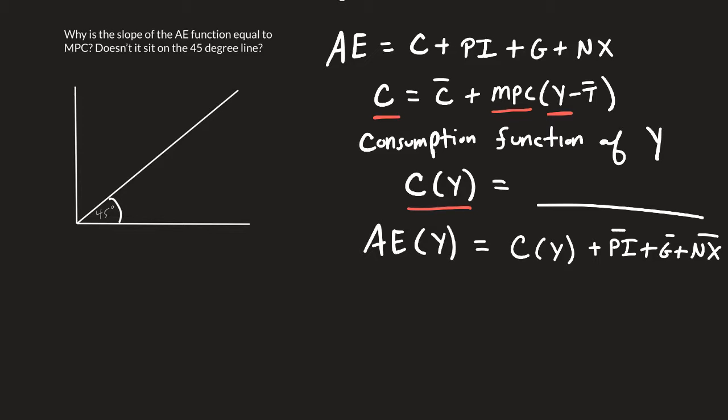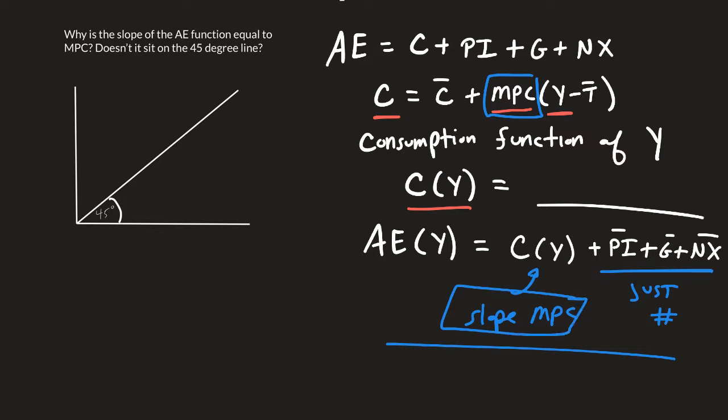The way that we built this, remember, was we started with the consumption function and what it looked like. The slope of the consumption function is marginal propensity to consume. So if the slope of the consumption function is marginal propensity to consume, the rest of these are just a number. That means the slope of the whole thing is going to be marginal propensity to consume.